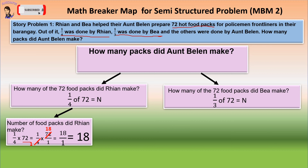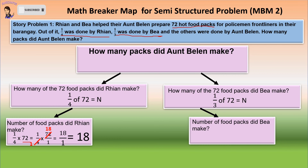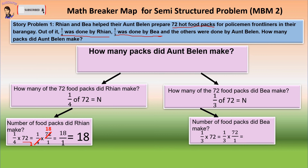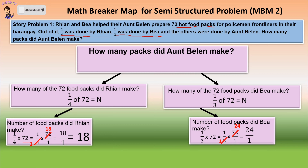Then, we have the second hidden question: how many of the 72 food packs did Bea make? We have one-third times 72. Again, change the whole number into fraction form: one-third times 72 over 1. We can now cancel 72 and 3: 72 divided by 3 is 24, and 3 divided by 3 is 1. Multiply numerator by numerator, denominator by denominator: 1 times 24 is 24, and 1 times 1 is 1. Simplify 24 over 1 — 24 over 1 equals 24.